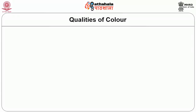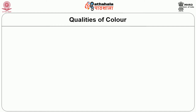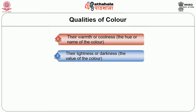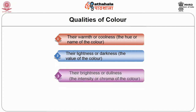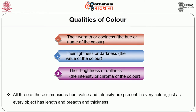Let us see the qualities of color. How do colors differ from one another? There are three properties or qualities which may be called the dimensions of color, which are just as distinct from one another as the length, breadth and thickness of an object. These color dimensions are: first, their warmth or coolness — that is the hue or name of the color; second, their lightness or darkness — that is the value of the color; third, their brightness or dullness — that is the intensity or chroma of the color. All three dimensions — hue, value and intensity — are present in every color, just as every object has length, breadth and thickness.